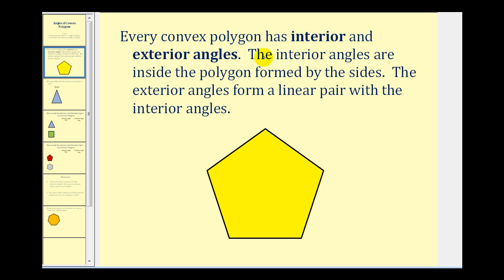Every convex polygon has interior and exterior angles. The interior angles are the angles inside the polygon formed by the sides. For this pentagon there are five interior angles: angle one, angle two, angle three, angle four, and angle five.